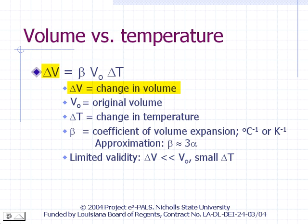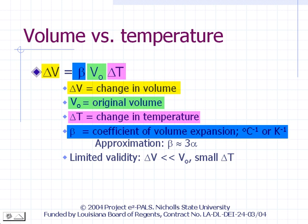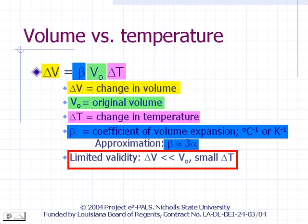The change in volume due to a temperature change can also be estimated using the coefficient of linear expansion. The change in volume delta V is directly proportional to the original volume V₀ and the change in temperature. The proportionality constant, represented by the Greek letter beta, is called the coefficient of volume expansion. It is approximately equal to 3 times alpha. Just like the formula for linear expansion, this formula is reliable only when the volume change is very small compared to the original volume, which tends to happen with smaller temperature changes. The unit for beta is also per degree Celsius or per Kelvin.